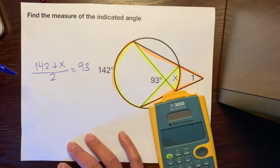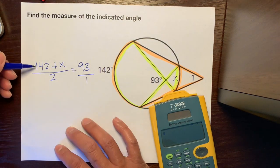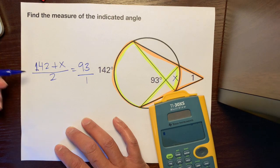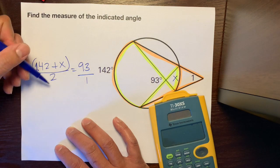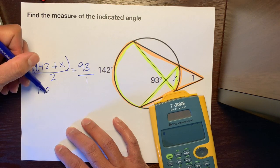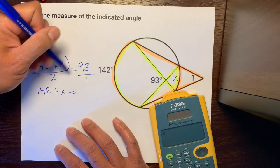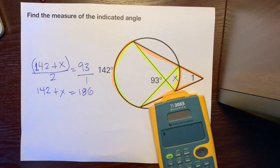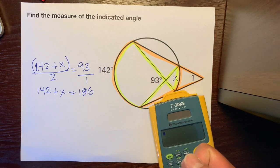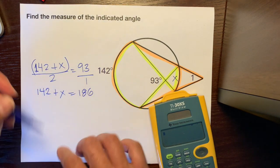Then we're going to put that invisible number under the 93, which is 1. Make sure that we know that this is a 1 again. We're going to cross multiply. So 1 times all of this is all of this. 142 plus x is equal to 2 times 93, which is 186.